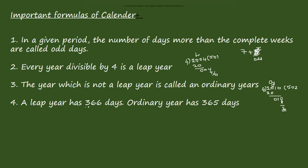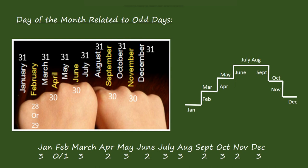A leap year has 366 days and an ordinary year has 365 days. The logic comes from February: for an ordinary year, February has 28 days, and for a leap year, February has 29 days. If you add all the days per month, you get 366 days for a leap year — because one day has been added to February — and 365 days for an ordinary year.